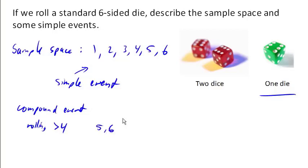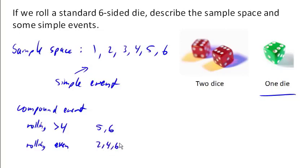Another possible compound event would be rolling an even number. In this case, there are three possible ways to have that event occur. So these are our sample spaces — those are all of our simple outcomes.